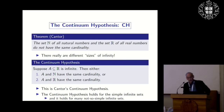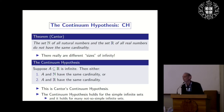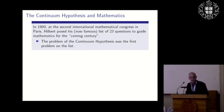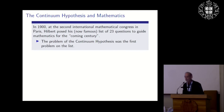The continuum hypothesis holds for the simple infinite sets, and for many not-so-simple sets, giving some intuition for it. In 1900, at the Second International Mathematical Congress, Hilbert posed his famous list of 23 questions to guide mathematics for the coming century. The problem of the continuum hypothesis was the first problem on the list.